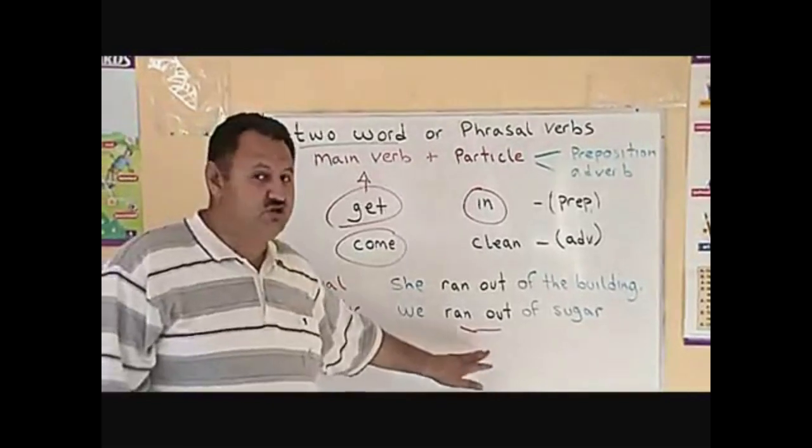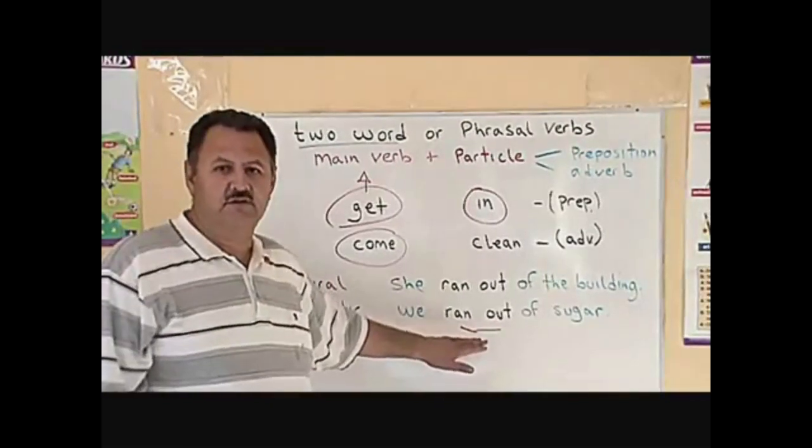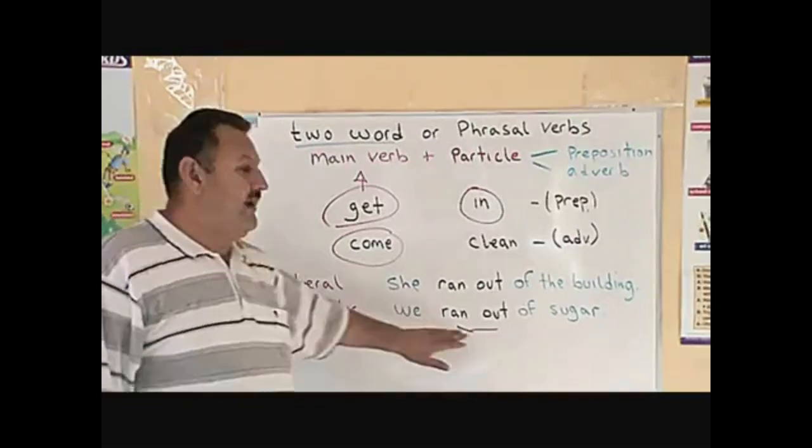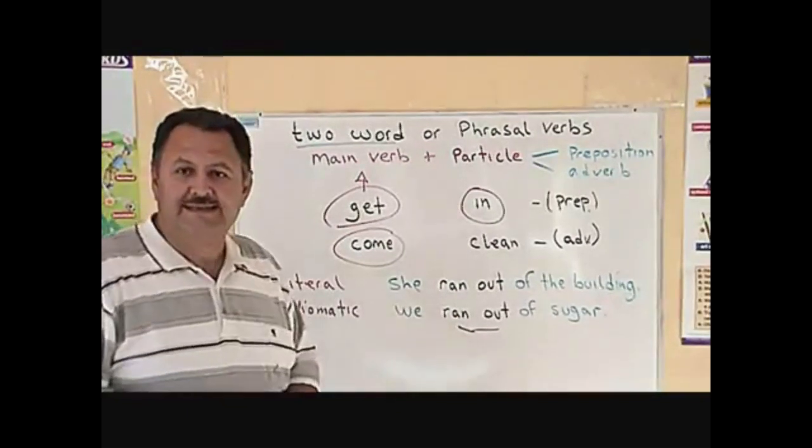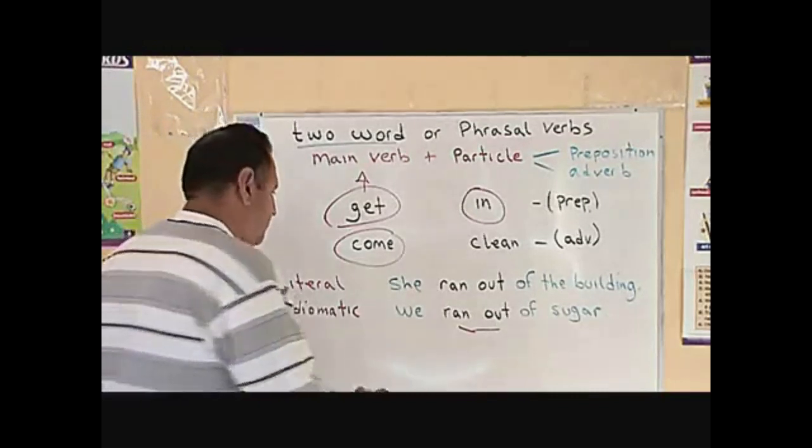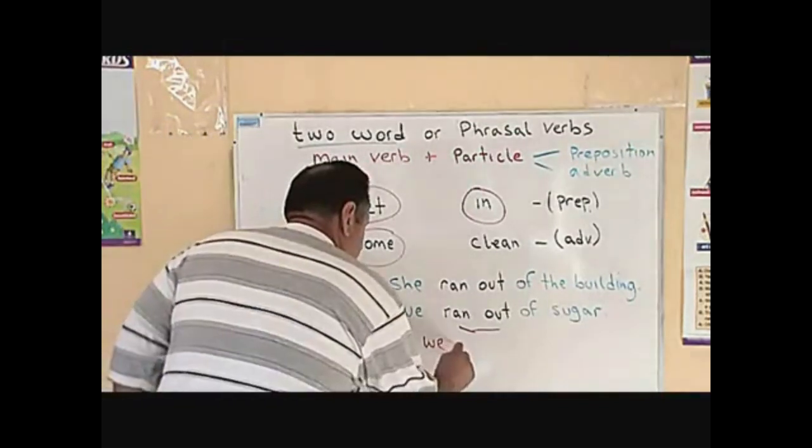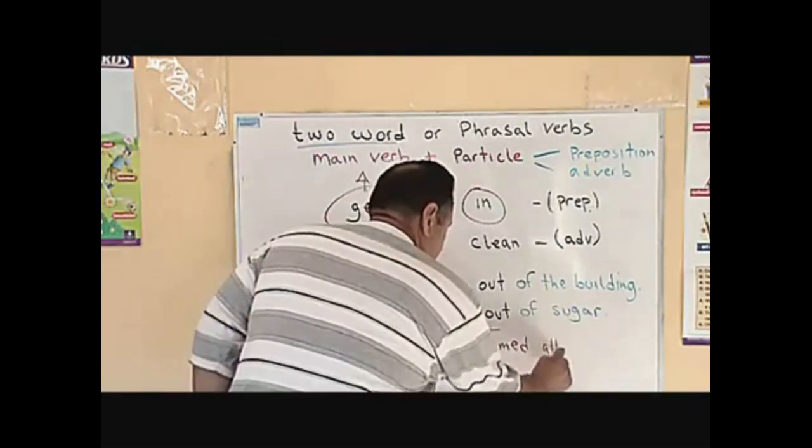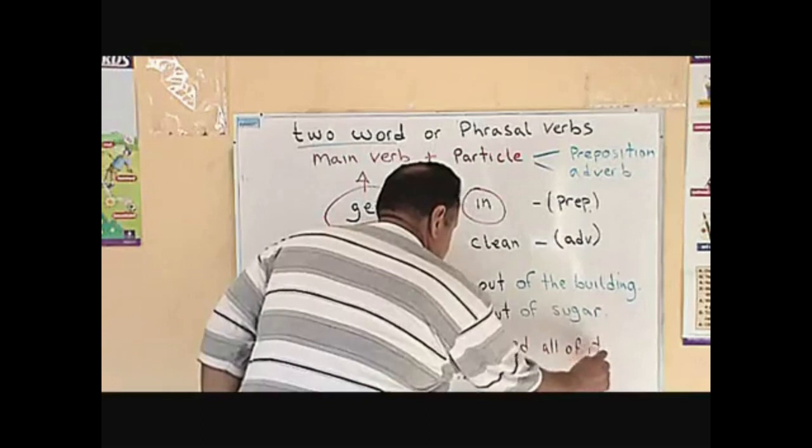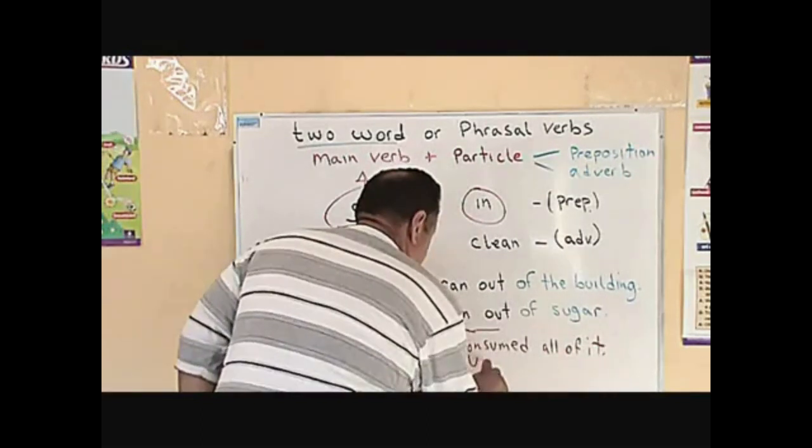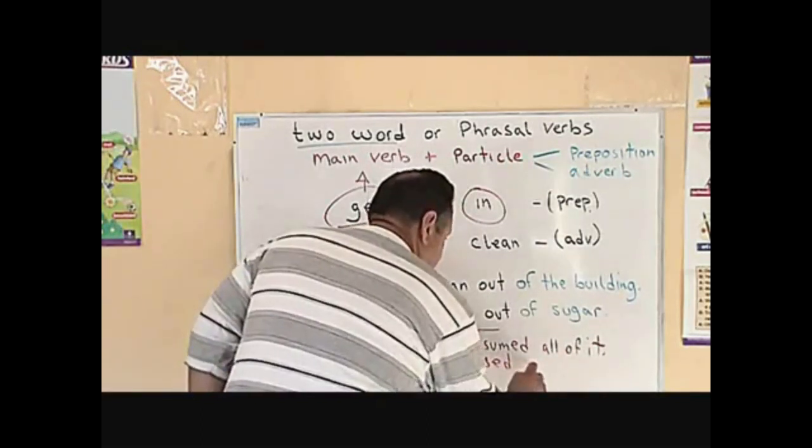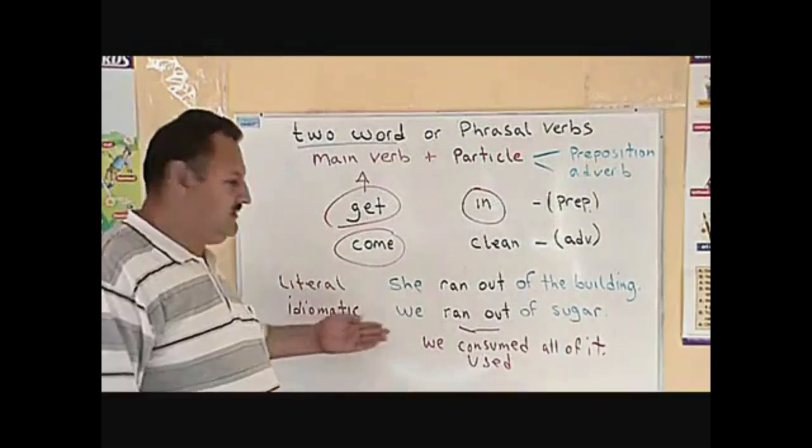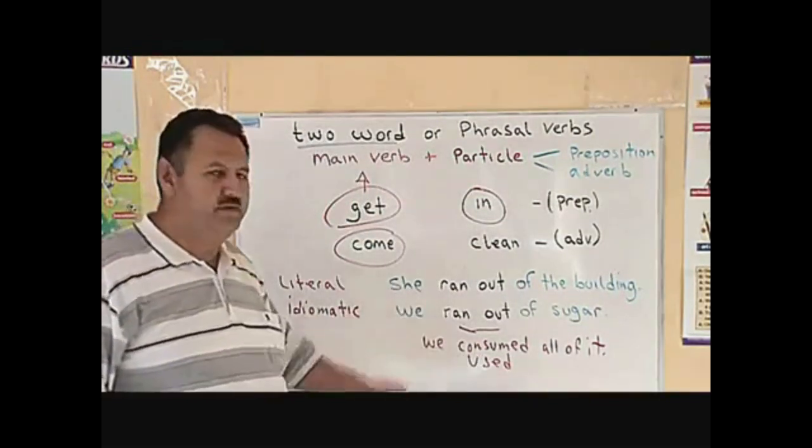Here, of course, the sugar did not run out of the building or anywhere. We ran out means that there is no more. We consumed all of it, or we used all of it. It's an idiomatic interpretation there.